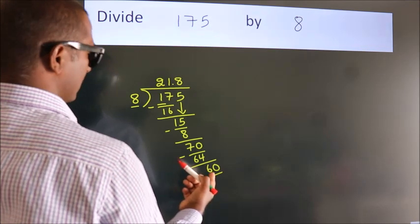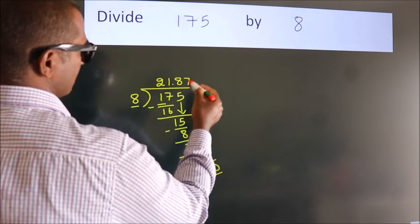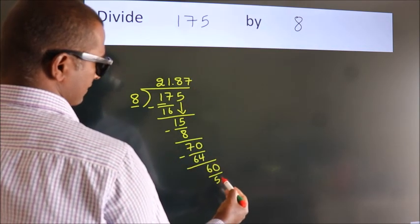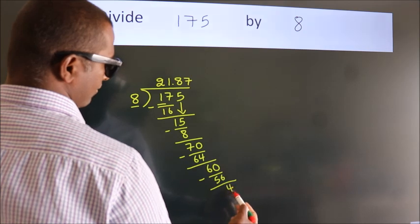A number close to 60 in the 8 table is 8 times 7 equals 56. Now we subtract. We get 4.